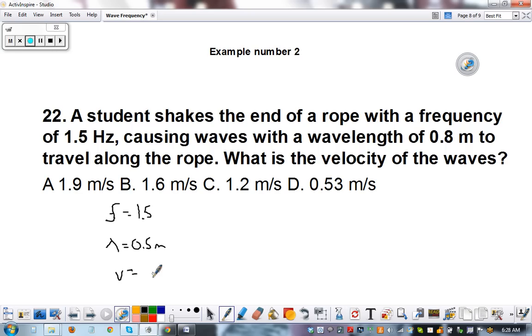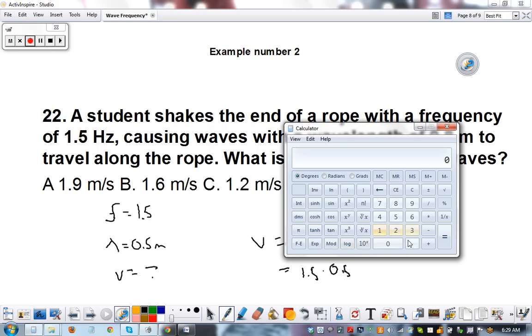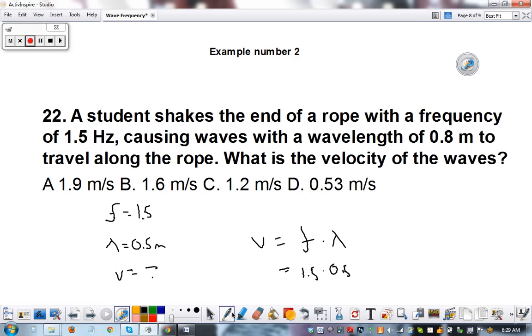What is the velocity? Question mark. Velocity equals frequency times wavelength. 1.5 times 0.5. Equals... 1.5 times 0.5. 0.75. In the units, this is velocity, so this is meters per second.